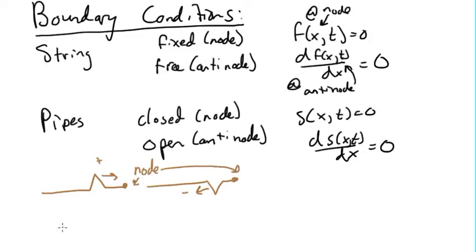Likewise, if we had a pulse coming in and then we had a free end, what's going to end up happening is that when it comes in, it's going to bounce off, but it's going to stay the same sign. So if it comes in with a positive amplitude, it's going to leave with a positive amplitude.